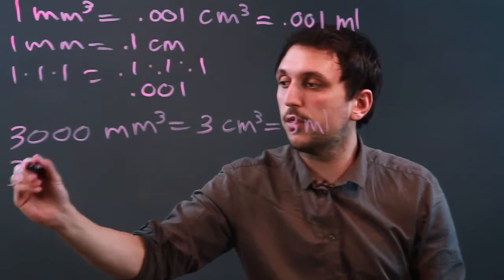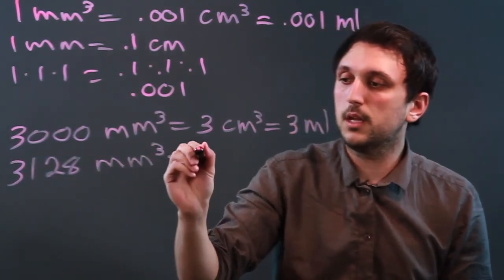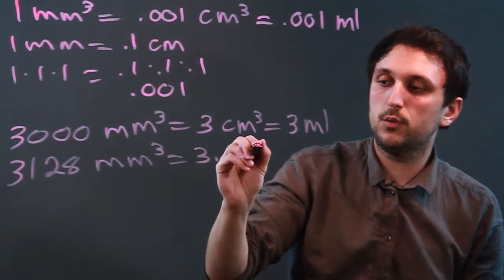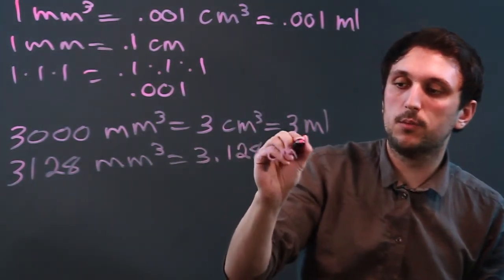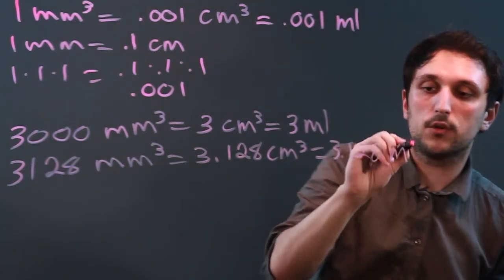And if we had 3,128 millimeters cubed, that would be 3.128 centimeters cubed, or 3.128 milliliters.